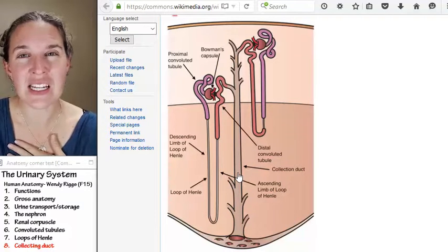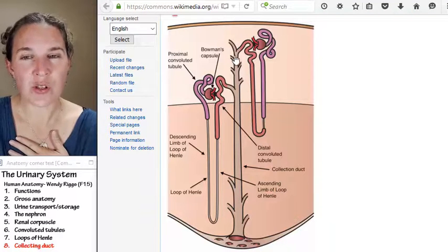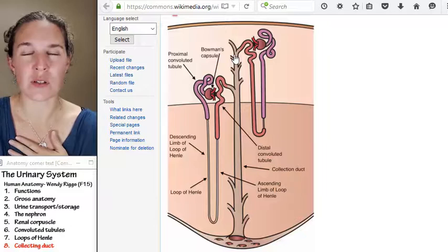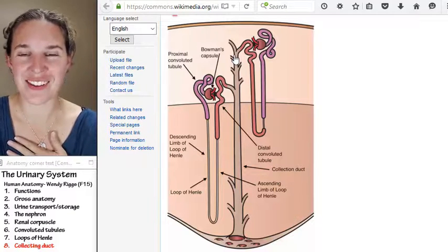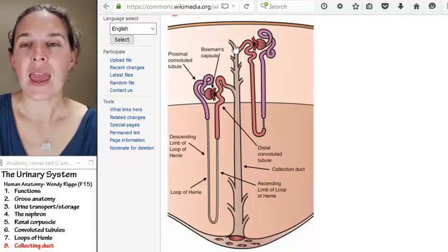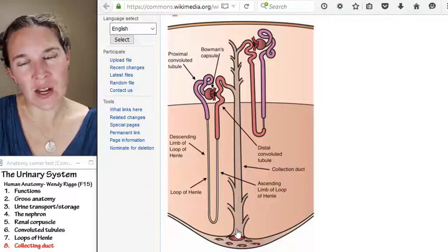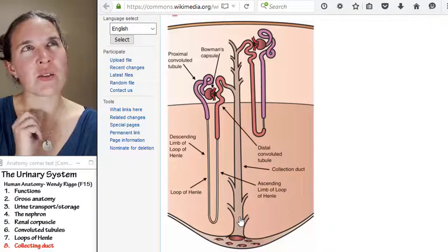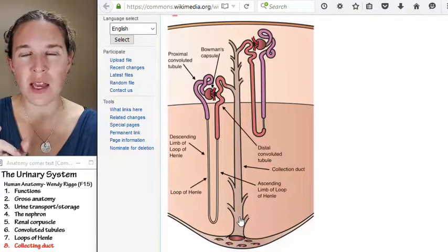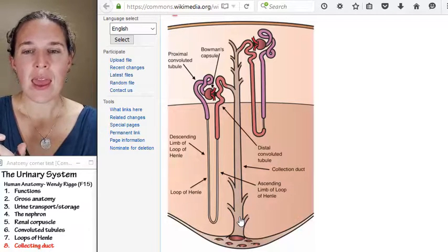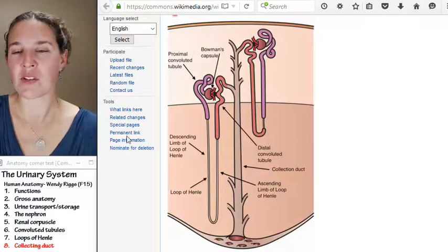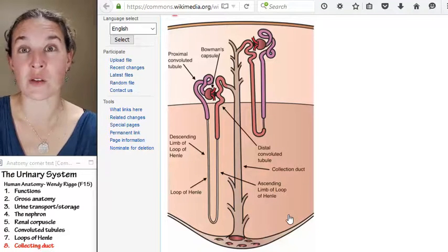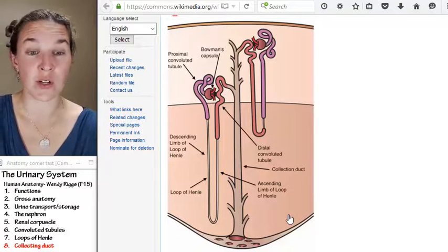The collecting duct tubules start out with simple cuboidal epithelium, and eventually as they get farther down toward the renal papilla, they actually turn into columnar epithelium. There's some thinking that that might have to do with the characteristics of the medulla, the interstitial fluid found in the medulla, which is related to function, which we won't talk about.